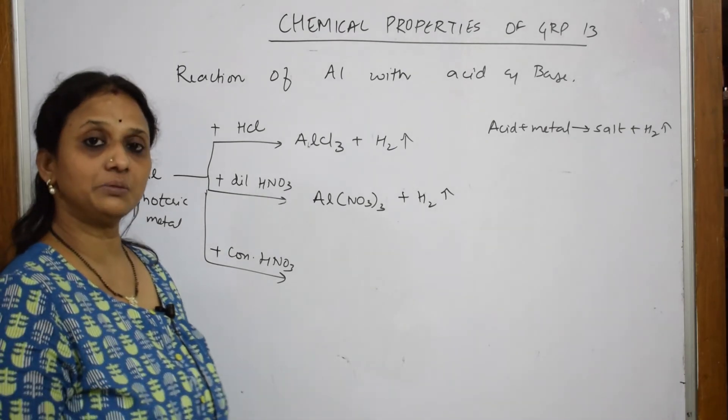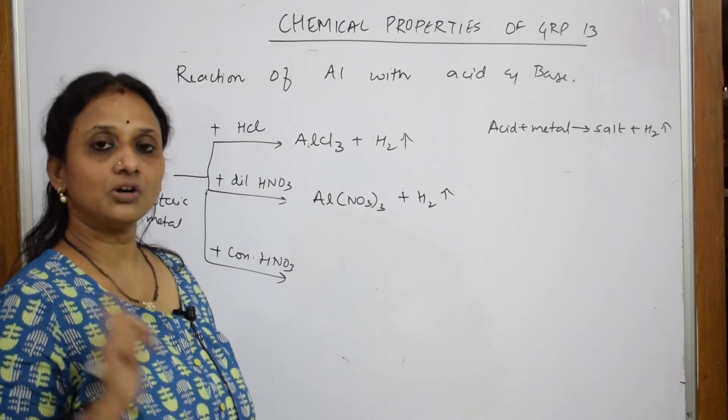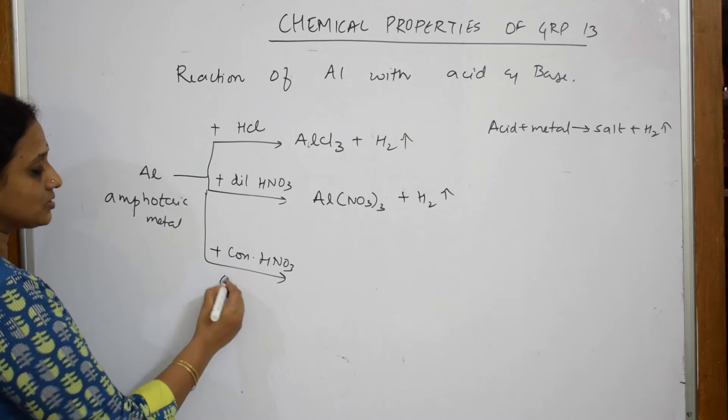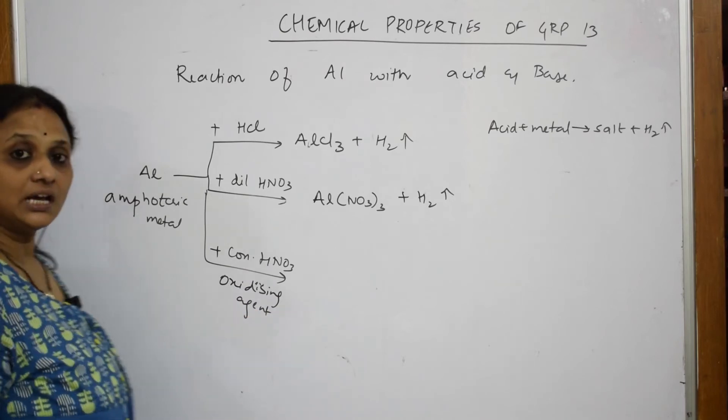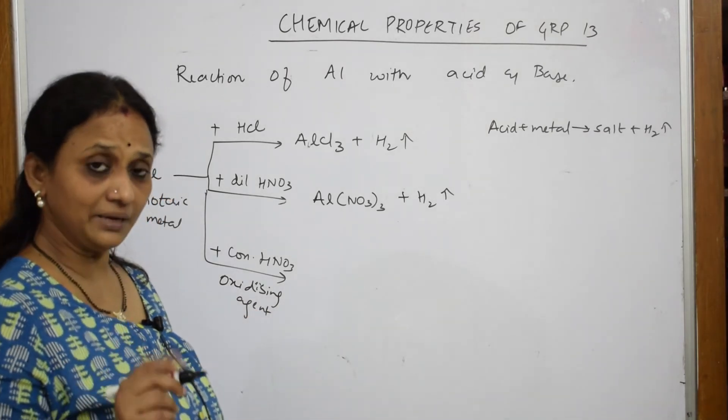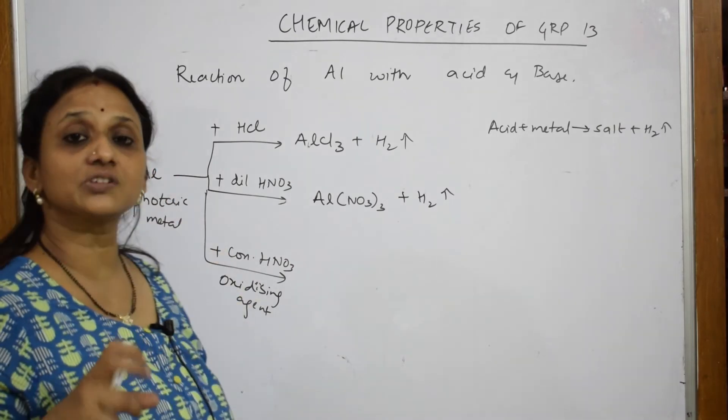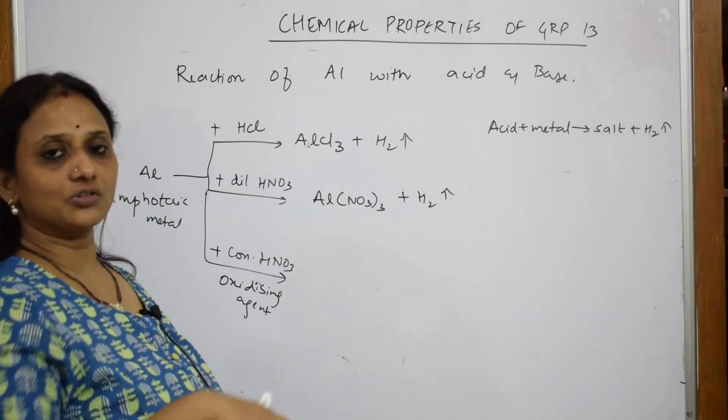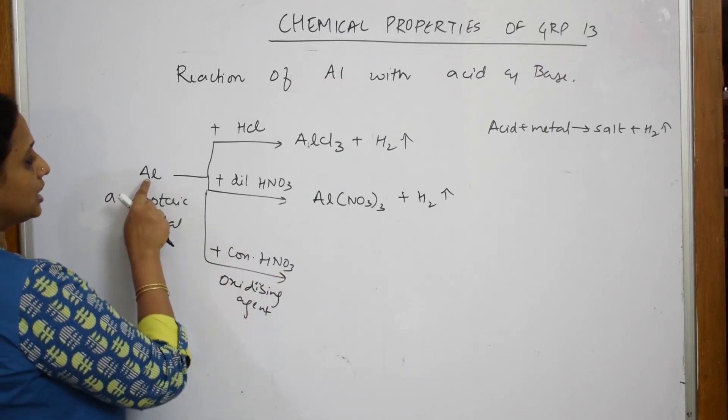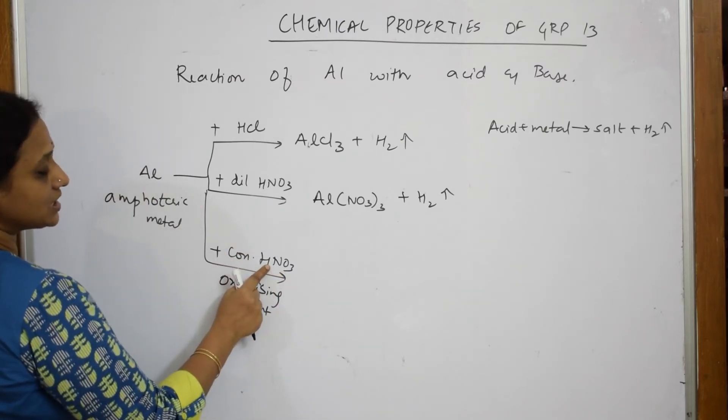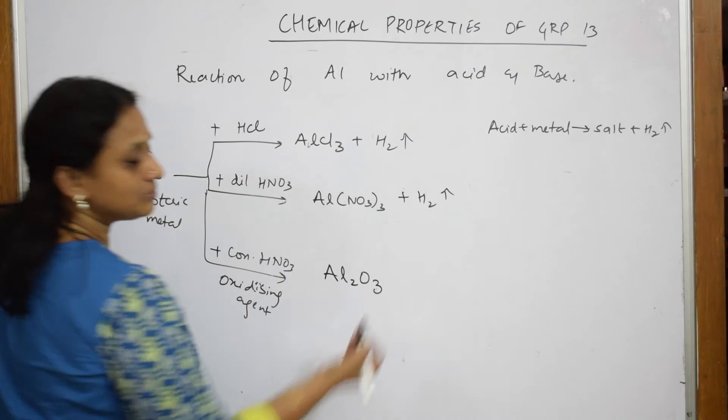Now, what happens when you take a small piece of aluminum metal and drop it in concentrated nitric acid? Remember, concentrated nitric acid. What is the role of nitric acid? It is an oxidizing agent, very important. So, oxidizing agent, what does it do? It is going to immediately convert your aluminum to its oxide form. Oxidizing property means adding oxygen to that and itself being reduced. Before the aluminum reacts with the nitric acid, this oxidizing agent will add oxygen to aluminum and it is going to form aluminum trioxide or aluminum oxide.